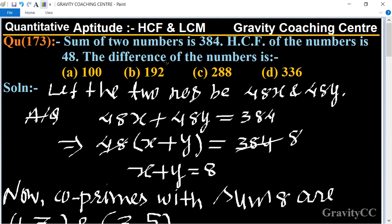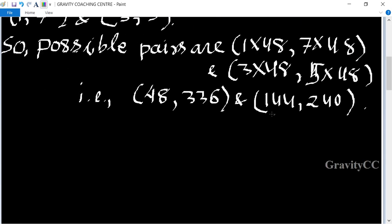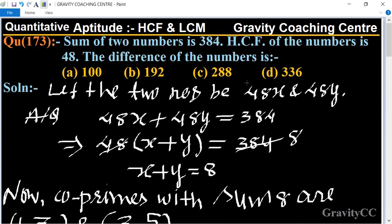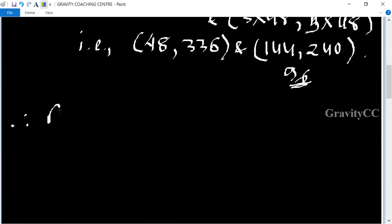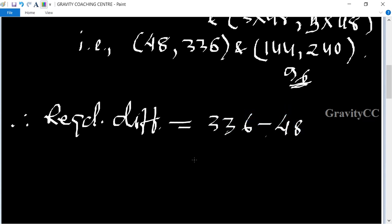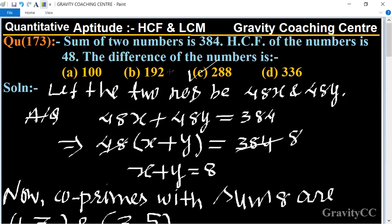So the difference of the numbers is the required difference equal to 336 minus 48 equal to 288, which is the required answer. So option C is the correct answer.